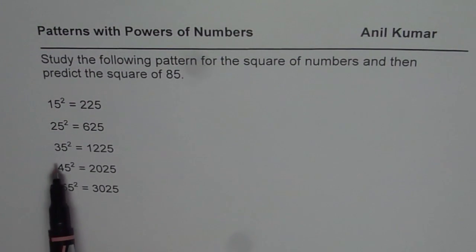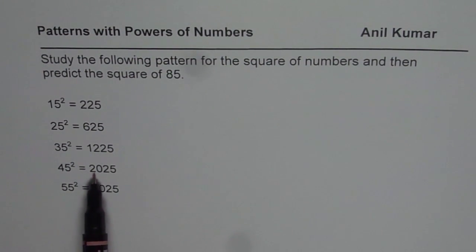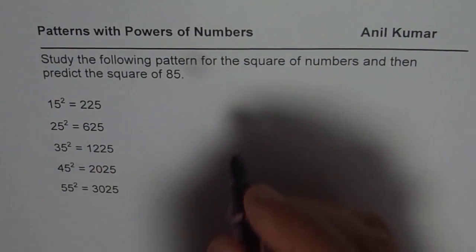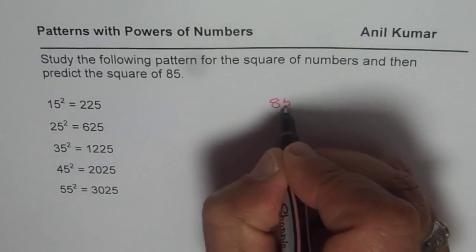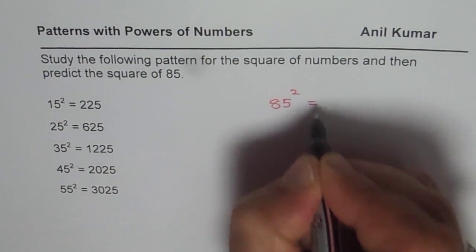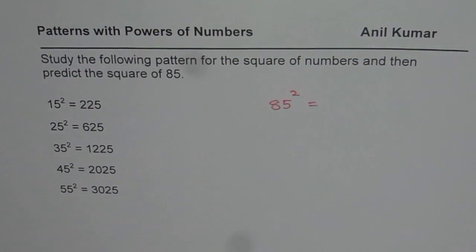625, 35 squared is 1225, 45 squared is 2025, 55 squared is 3025. You need to find the value of 85 squared. What is that equal? So you can pause the video, answer the question, and then look into my